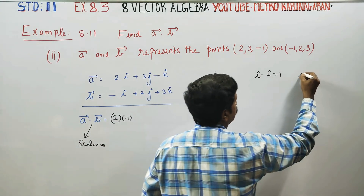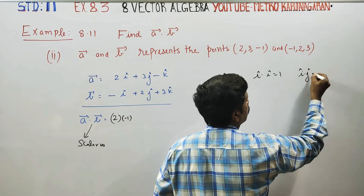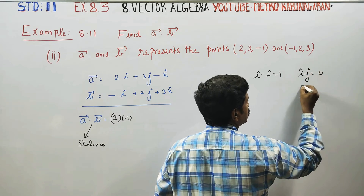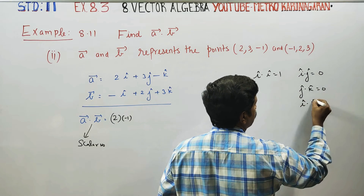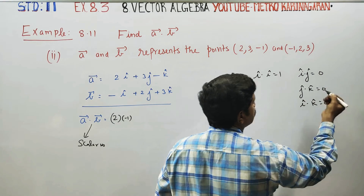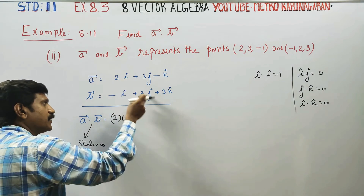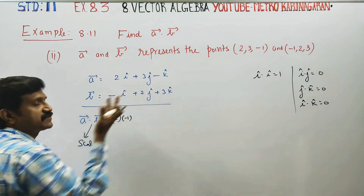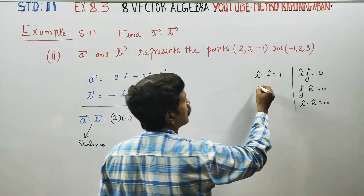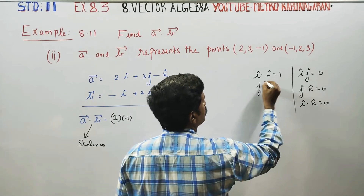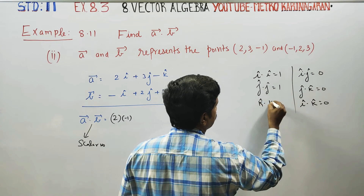J dot K answer is 0. I dot K answer is 0. Multiply I dot I, J dot J, K dot K — those multiplications give 1.